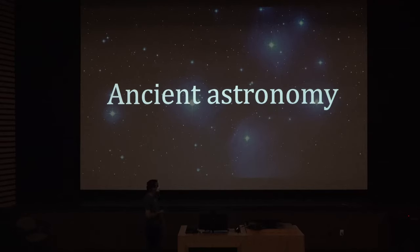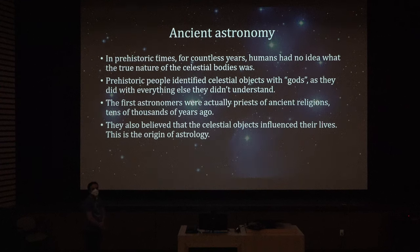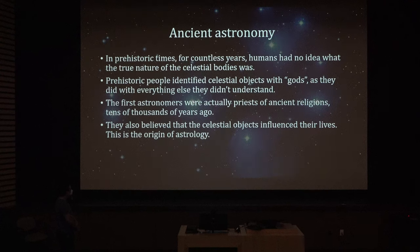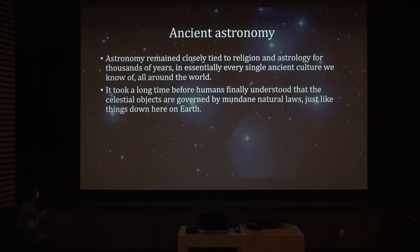Let's talk about ancient astronomy. In prehistoric times, for hundreds of thousands of years, humans had no idea what the true nature of celestial bodies was. Prehistoric people identified celestial objects with gods, as they did with everything else they didn't understand. The first astronomers were actually priests of ancient religions tens of thousands of years ago, and they believed celestial objects influenced their lives — this is the origin of astrology. Astronomy remained closely tied to religion and astrology for thousands of years in essentially every single ancient culture around the world.